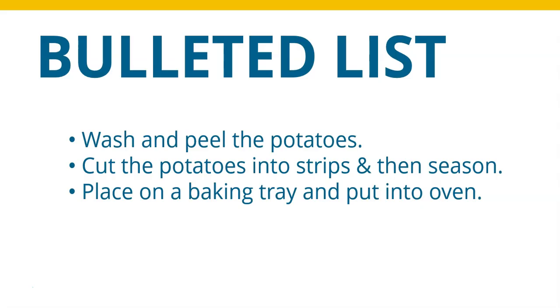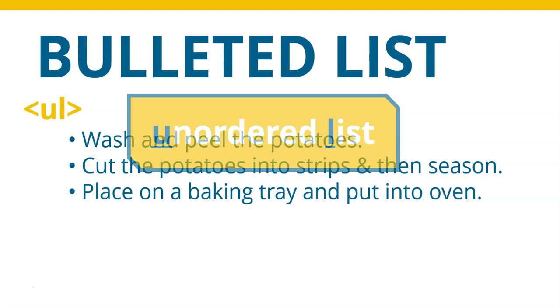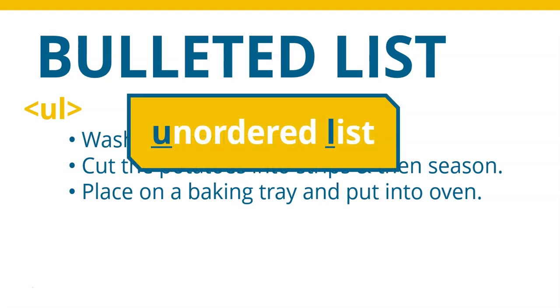With HTML, we need to have a tag that says this is where the list starts, and that is the UL tag. UL stands for unordered list because bullets don't have a particular order. They're just points. So this is an unordered list.